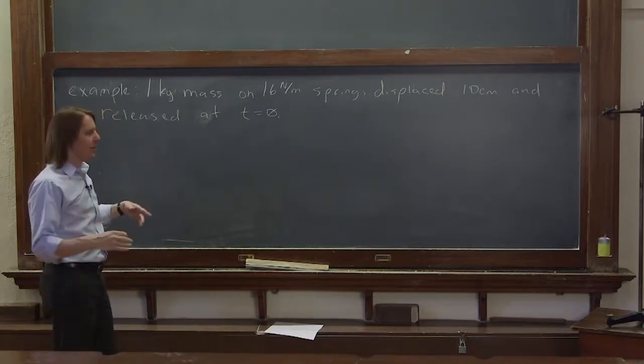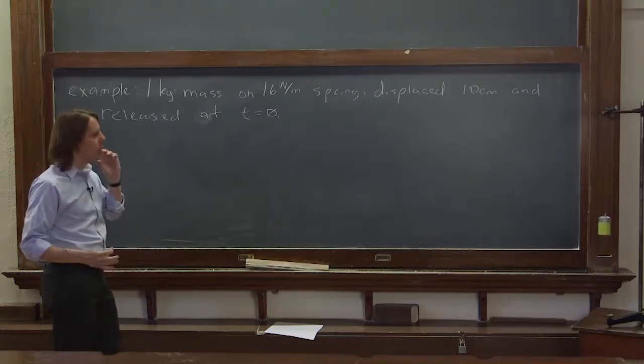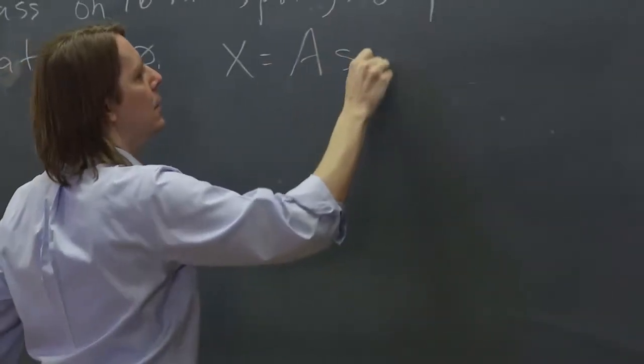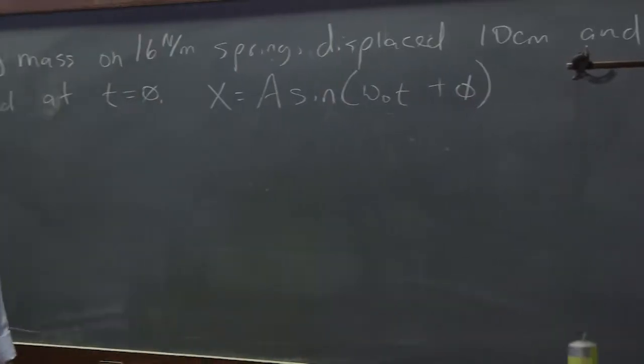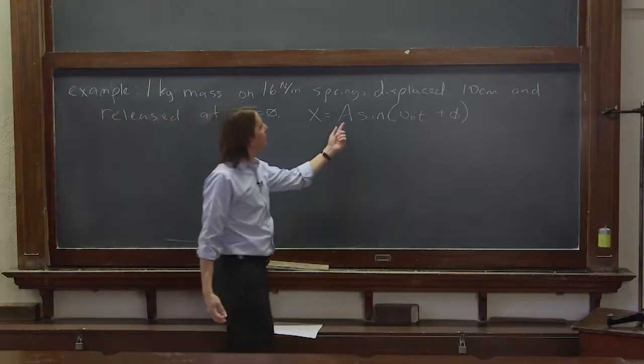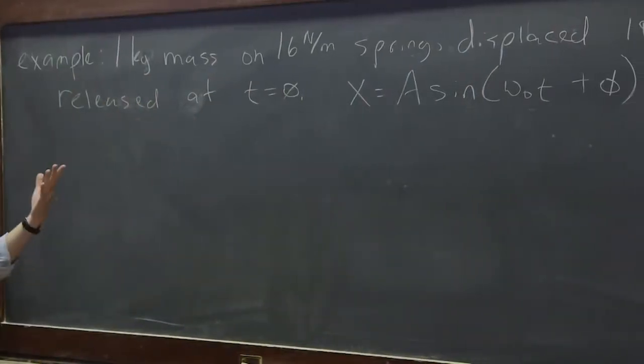So now we've done most of the problem. We're not going to go back and write the equation of motion and guess a solution. We know that the general form of the answer is A sine omega naught t plus phi. The point of this problem is to use our initial conditions to get the actual amplitude and the actual phase for these initial conditions.